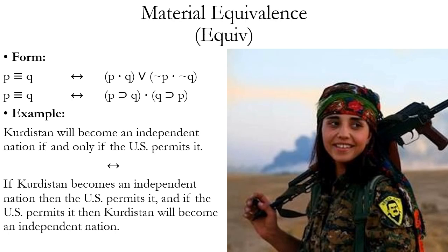The second version of this allows you to go from a conjunction of conditionals. Those conditionals are logical converses of each other: P horseshoe Q versus Q horseshoe P. So if you have both of those conditionals in a conjunction, that's logically equivalent to P if and only if Q, because the triple bar is saying both if P then Q and if Q then P.